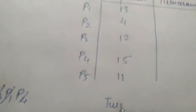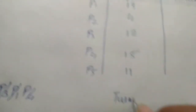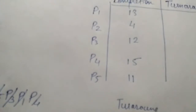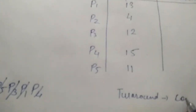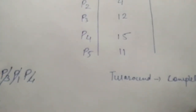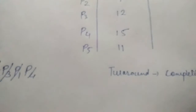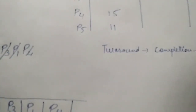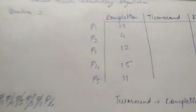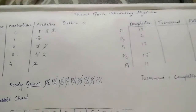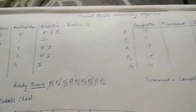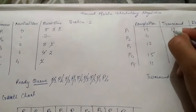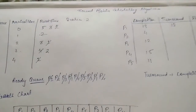Now we calculate turnaround time. The formula for turnaround time is: Turnaround Time = Completion Time minus Arrival Time. So for P1: 13 minus 0 equals 13.